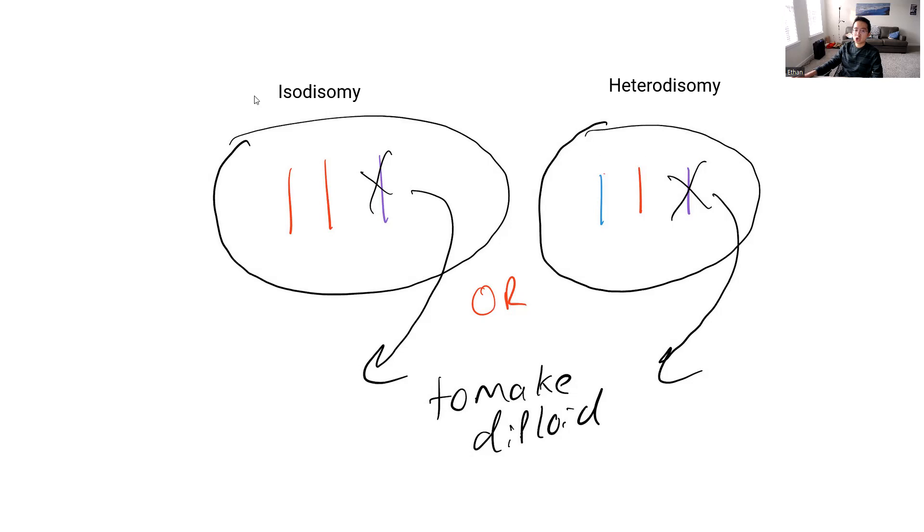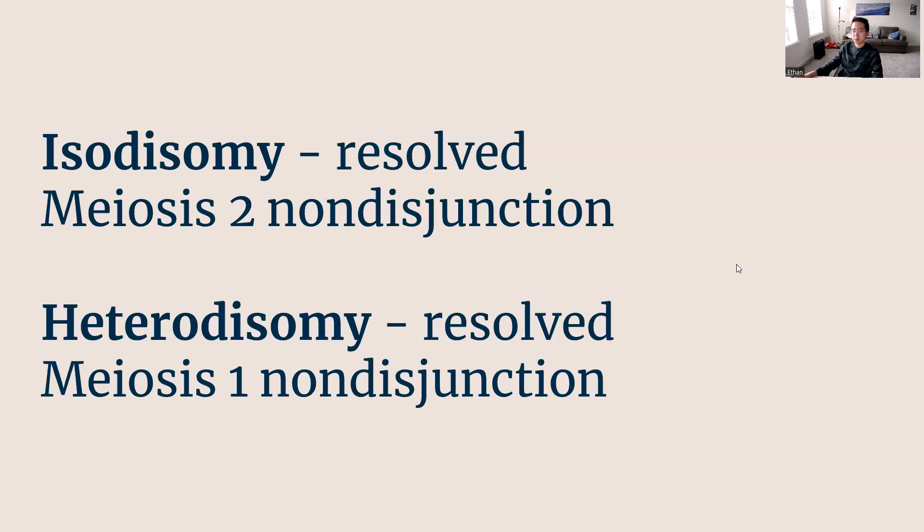I do want you to think of it mechanistically. You could just memorize that, but go back to the explanation I gave you. You could also think of this as isodisomy is a resolved meiosis II nondisjunction, right? Because meiosis II nondisjunction involves failure to separate sister chromatids. So you create gametes with both of the chromatids present, and the same concept applies for heterodisomy. It's a resolved meiosis I nondisjunction. You create gametes that have both homologous chromosomes inside. Fertilization occurs creating a trisomy. You kick out the chromosome from the other parent, creating a heterodisomy where you have two of these homologous chromosomes that are there only because there was a nondisjunction in meiosis I.